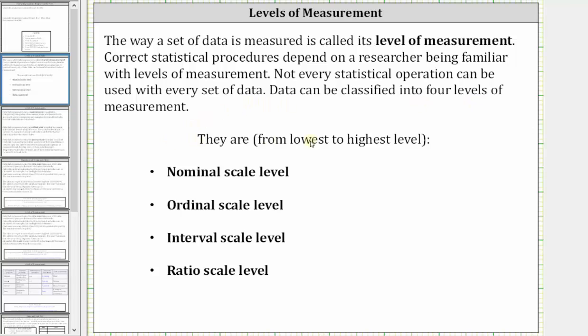Here they are shown from lowest level to highest level. First we have the nominal scale level, followed by the ordinal scale level, then the interval scale level, and finally the ratio scale level.